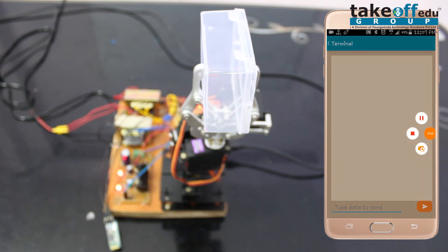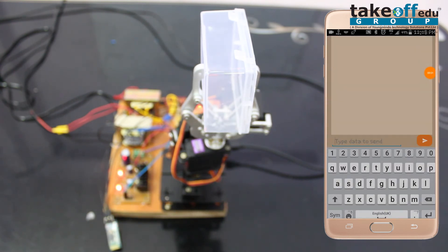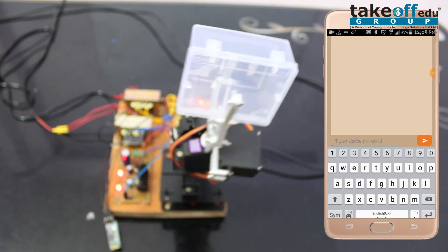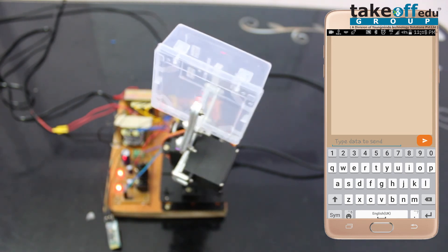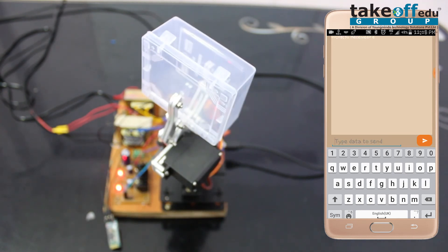Now, I am sending C for rotating the directions of this robotic arm. Now, I am sending D for rotating the other direction.